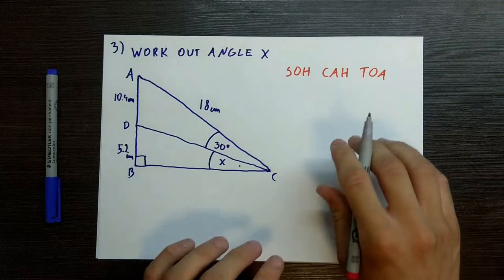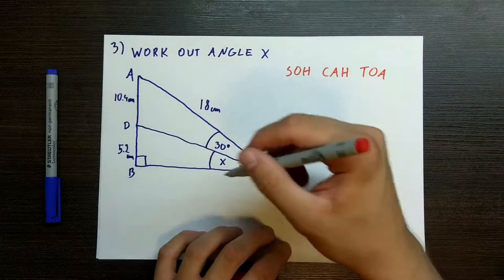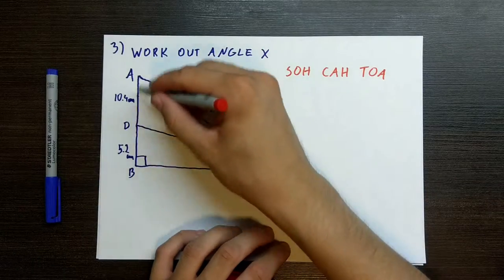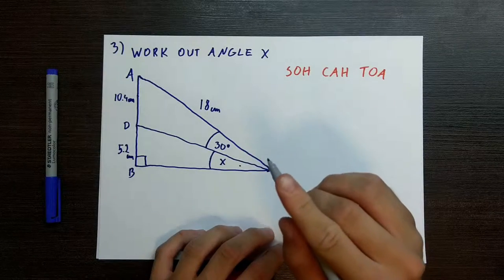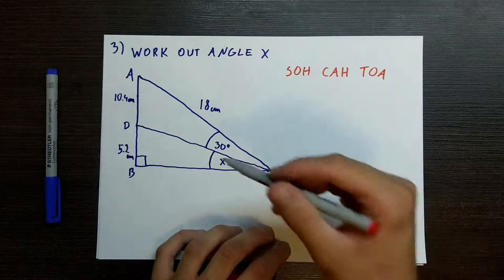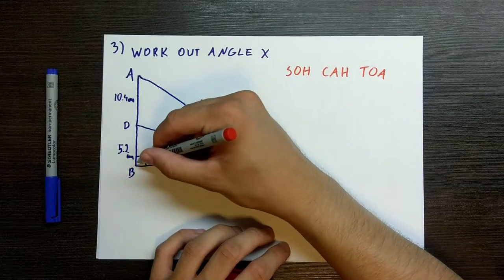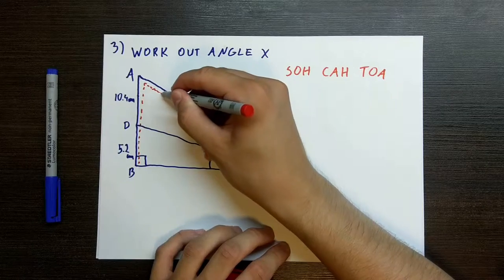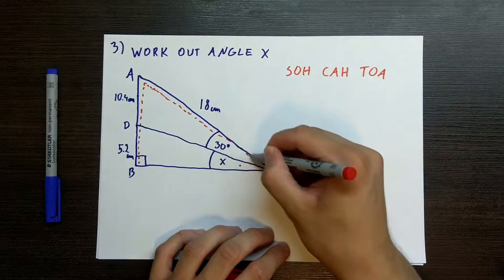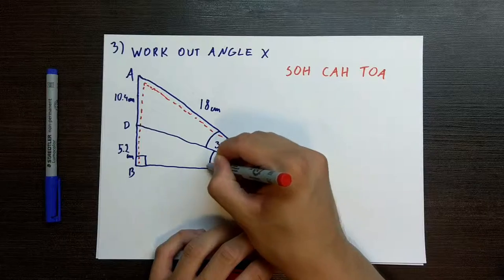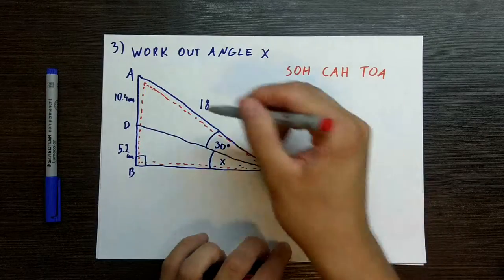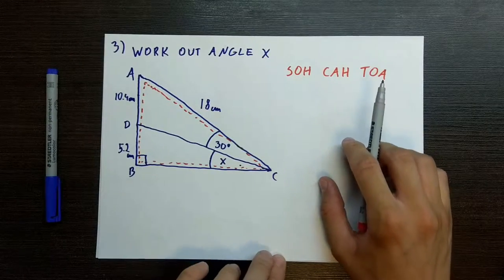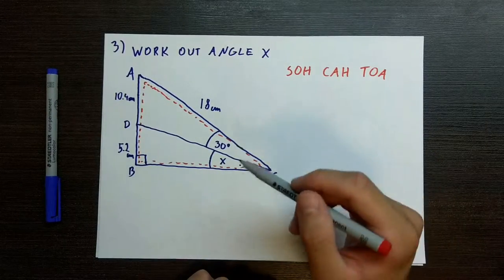So how on earth do we solve this? Well, the key to this question is to notice that these two triangles put together make a third triangle, which happens to be a right angle triangle. It comes down here and then goes right back here, making this huge right angle triangle. But what do we do with that information? Well, here is our game plan — it is always good to have a game plan for how you are going to solve the question before you start.